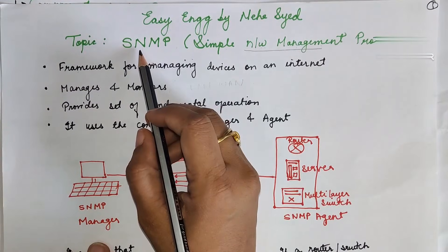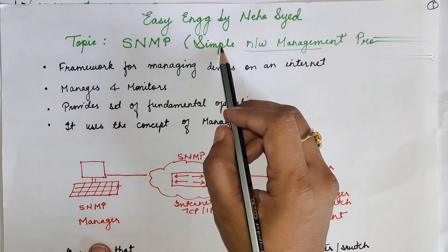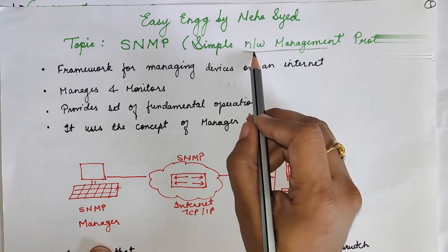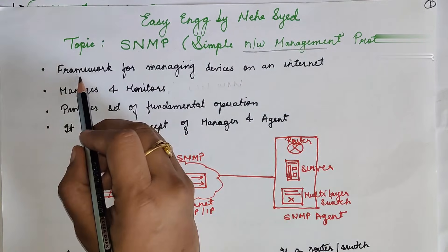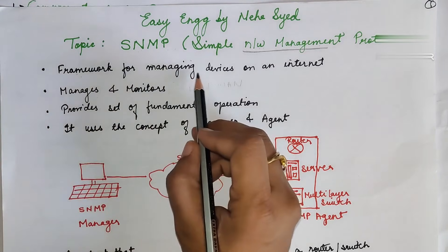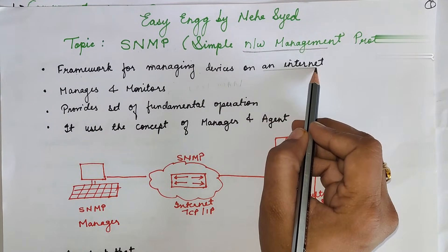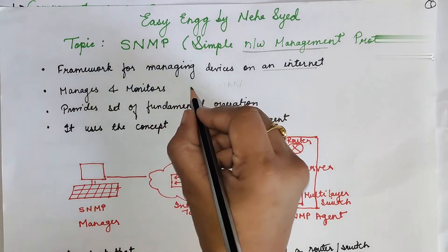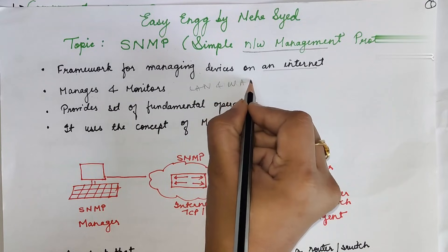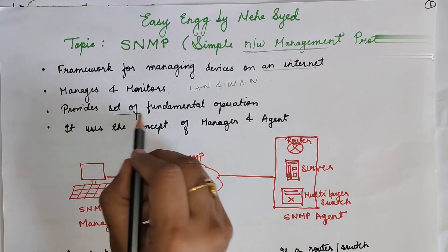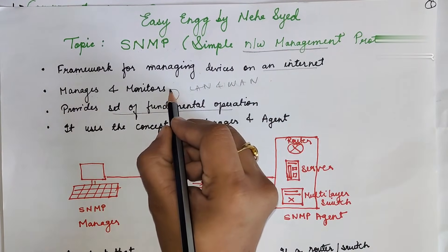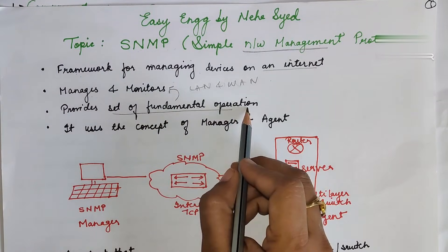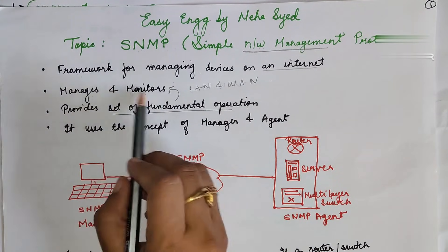Welcome back to my channel. Today's topic is SNMP, that is Simple Network Management Protocol. As the name indicates, it is used for managing the network — we can say it is a framework for managing devices on the internet. It is used not only for managing but also for monitoring network devices on LAN and WAN. It provides a basic set of fundamental operations to easily manage and monitor the network.